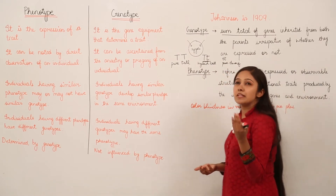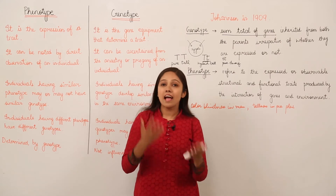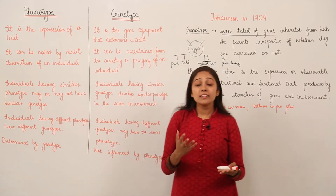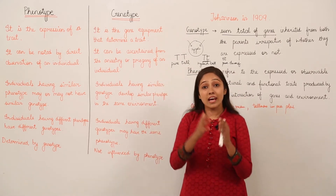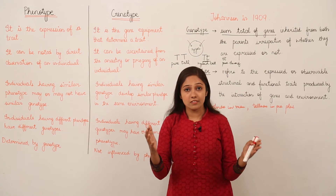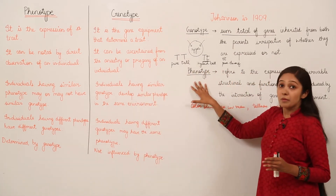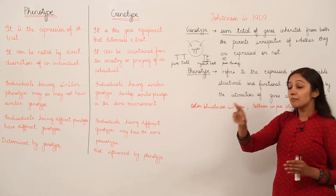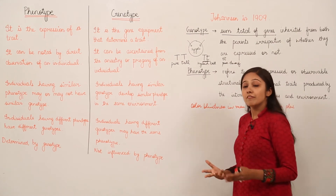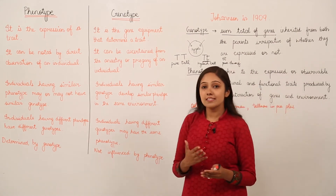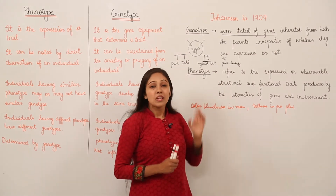When we talk about environment, consider that in summers our skin gets easily tanned because it is exposed to direct sun rays. That tanning is the phenotype, because it depends upon the environmental condition. Since it is very hot and we are facing direct sun rays, our skin gets tanned. So this is an example of phenotype depending on environment.